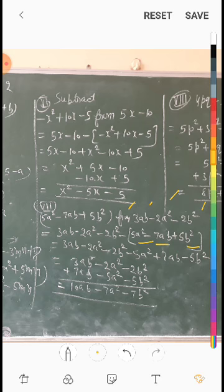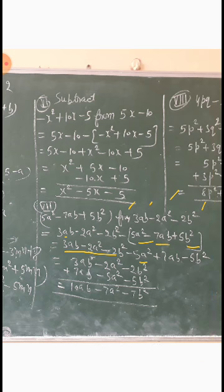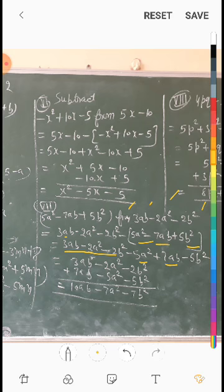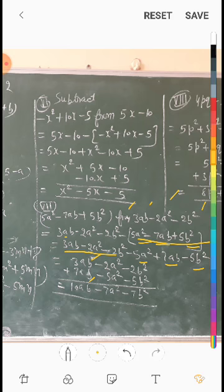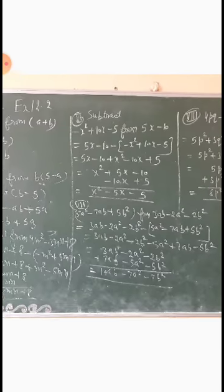इसको हम bracket में लिखेंगे। पहले तीनों as it is लिखेंगे, जैसे ऊपर है। minus के बाद bracket है, तीनों के sign change हो जाएंगे: minus 5a² plus 7ab minus 5b²। उसके बाद like terms एक दूसरे के नीचे लिख देंगे — 3ab के नीचे 7ab, minus 2a² के नीचे minus 5a², minus 2b² के नीचे minus 5b².